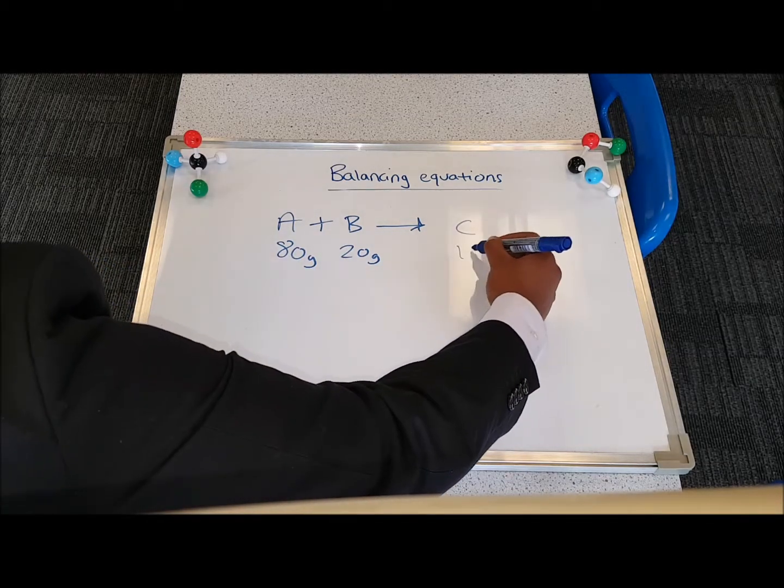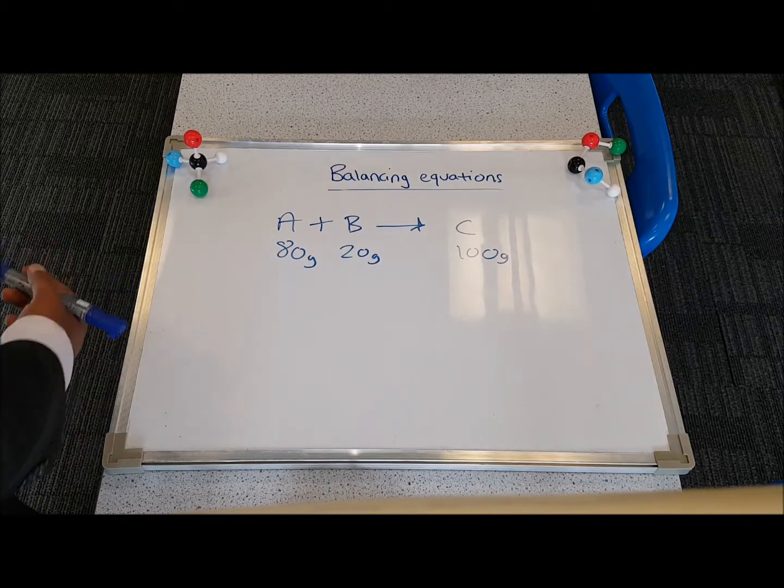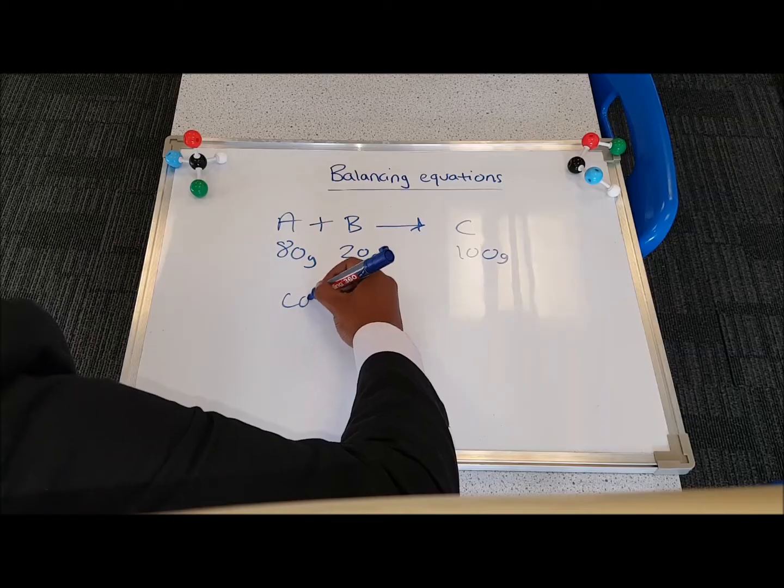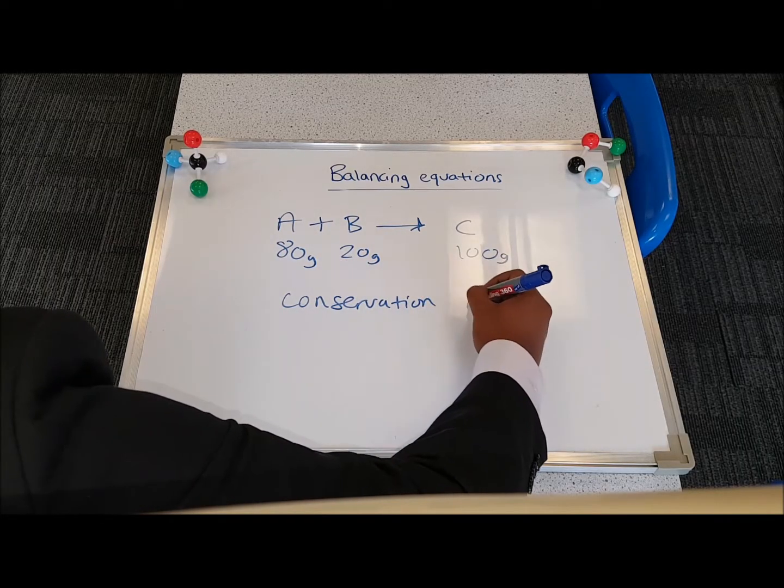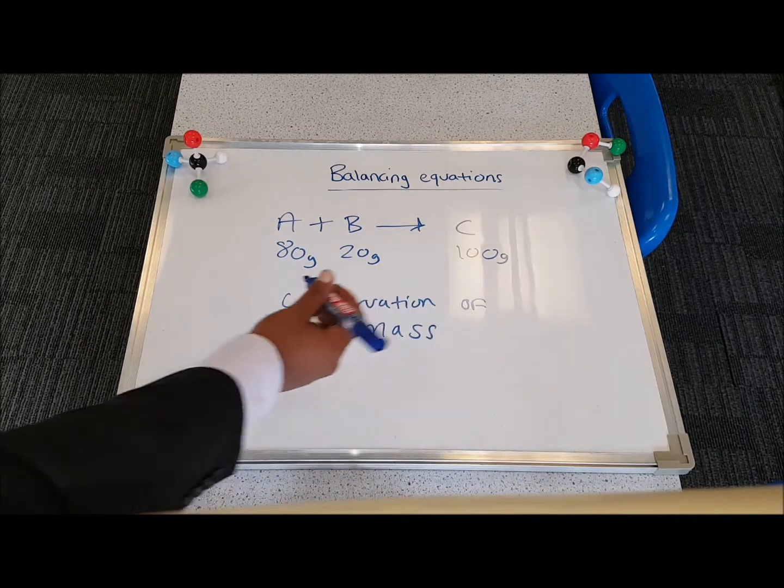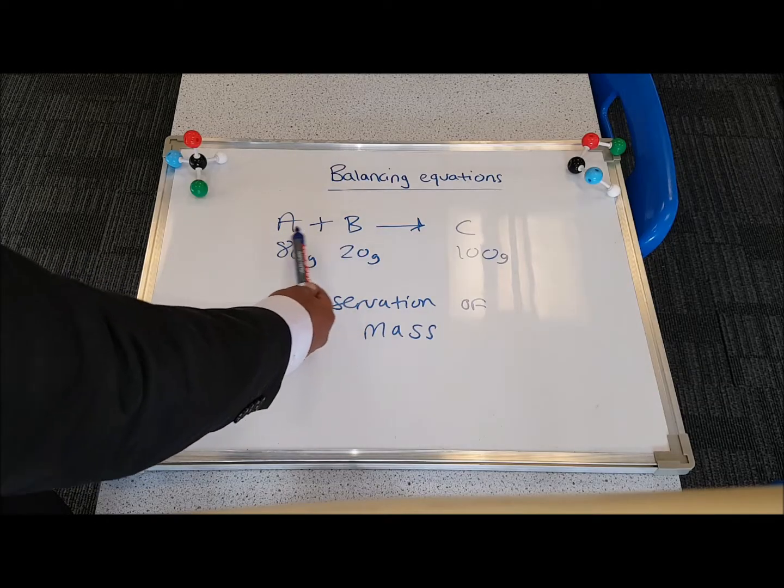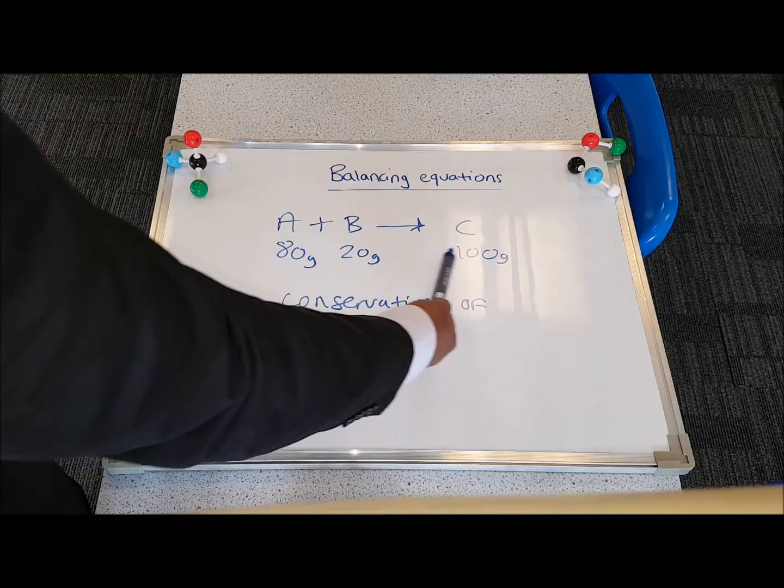Well, the answer should be 100 grams. And the reason why is because of this concept in chemistry called conservation of mass. What this simply states is that the total mass of the reactants must equal the total mass of the products.